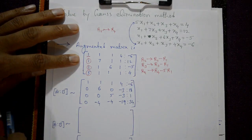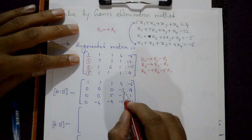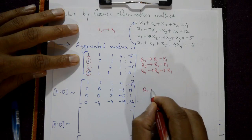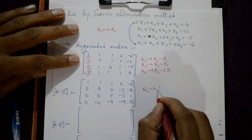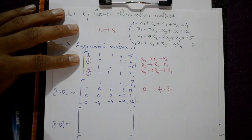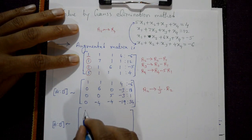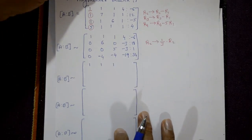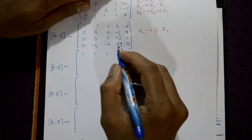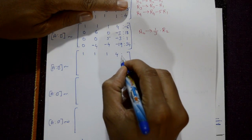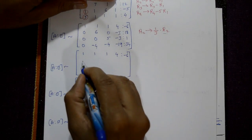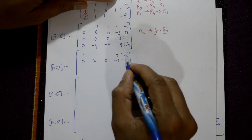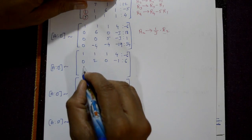Now in the second row we divide by 3: R2 = (1/3)×R2. The first row remains unchanged [1, 1, 1, 4 | -6]. The second row after dividing by 3 becomes [0, 2, 0, -1 | 6].